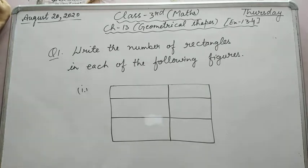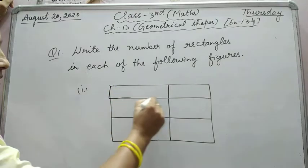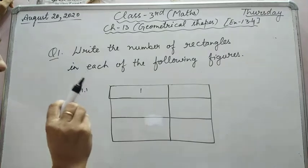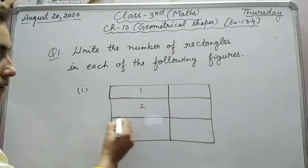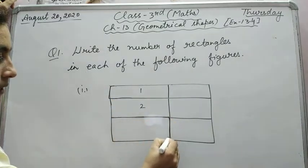In this question, rectangles are asking, so in this figure you have to be aware of how many rectangles are there. Let's start. First rectangle, with the help of pencil you can write one. Second rectangle, this one clear. Third one, this one. I am repeating.